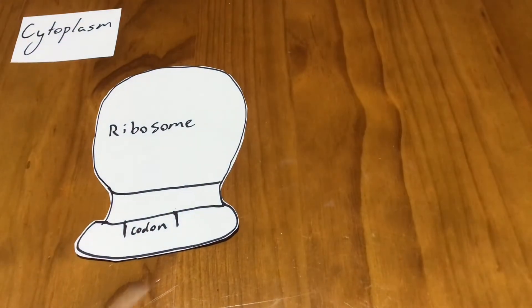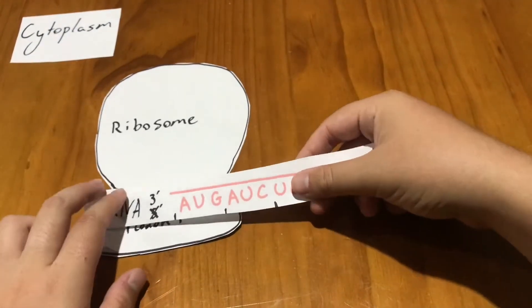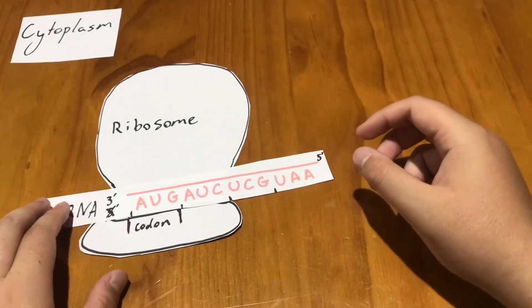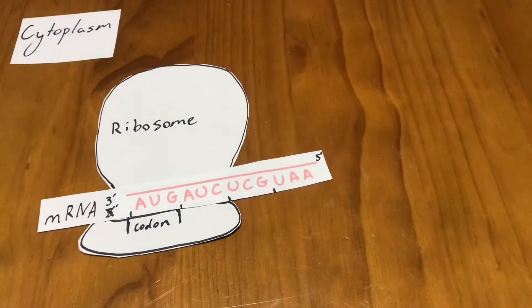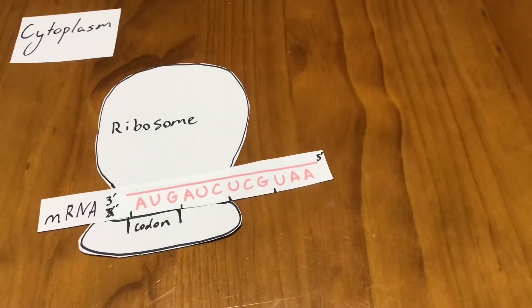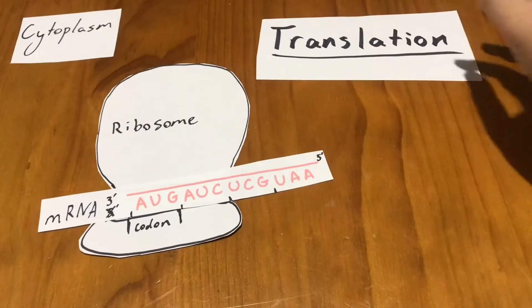Once in the ribosome, this is where translation will take place. In the cytoplasm, there are many tRNA molecules available, also known as transfer RNA, that carry an amino acid, the monomer of a polypeptide.